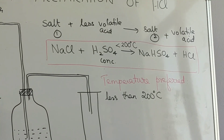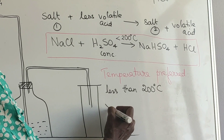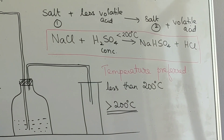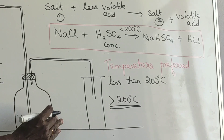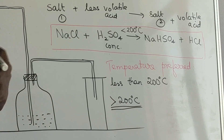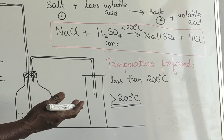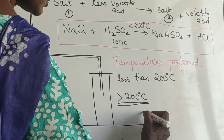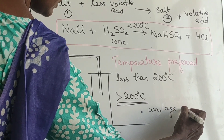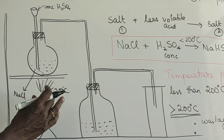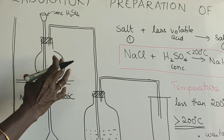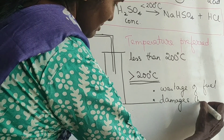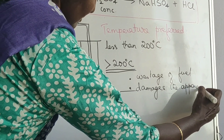Why shouldn't we increase the temperature above 200 degrees? First, the fuel required is more, causing wastage. When we are focused on cost cutting, going to high temperature wastes a lot of fuel. Second, the apparatus is made of glass, and high temperature could damage or break it.